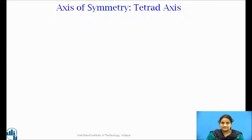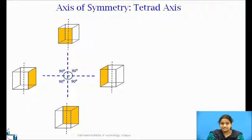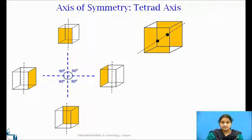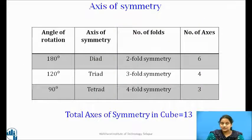For 4-fold symmetry, the crystal is rotated through 90 degrees. We can see the change in position of the cube with every rotation of 90 degrees. By the fourth rotation of 90 degrees, the cube achieves self-coincidence. Hence, it is called 4-fold symmetry and the axis is called the tetrad axis. A line joining the centers of pairs of opposite parallel faces provides the tetrad axis. There is 1 tetrad axis normal to each pair of parallel faces, so the number of tetrad axes is 3. The axes of symmetry in a cube are thus 6 diad, 4 triad, and 3 tetrad, giving a total of 13 axes of symmetry.